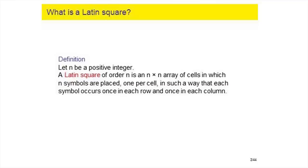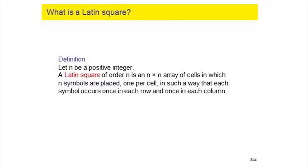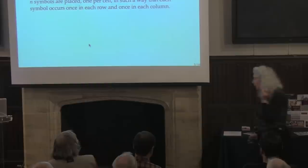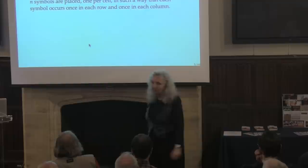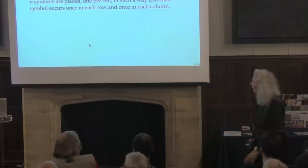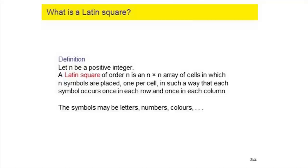I have to tell you what a Latin square is. I'm a mathematician, so I give you a definition. Let n be any positive integer. Then a Latin square of order n is an n-by-n square array — I'll call the things in it cells — in which we place n symbols such that each symbol appears exactly once in each row and once in each column. The symbols might be A, B, C, D, they might be numbers, they might be colours. Here is a Latin square of order eight with eight different colours, each appearing once in each row and once in each column.